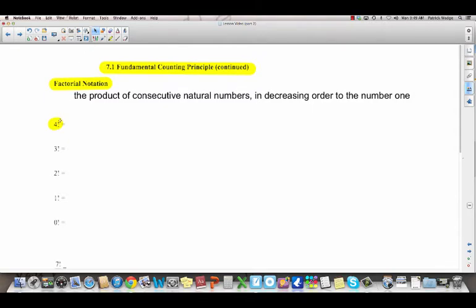So for example, if we wanted to know what 4 factorial is, what you would do is you'd start at the 4, and you'd multiply it by 3, by 2, by 1, you go all the way down to 1. And whatever that equals is your answer. 4 times 3 is 12, times 2 is 24, times 1 is 24. 3 factorial means 3 times 2 times 1. 3 times 2 is 6, times 1 is 6. 2 factorial means 2 times 1, which is 2. 1 factorial just means 1. So what does 0 factorial mean?